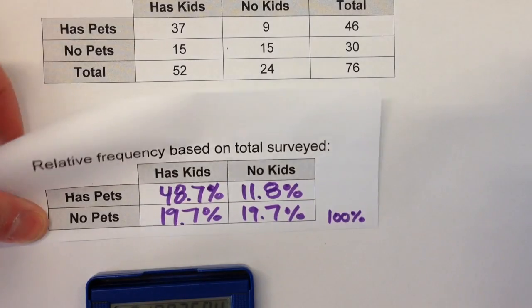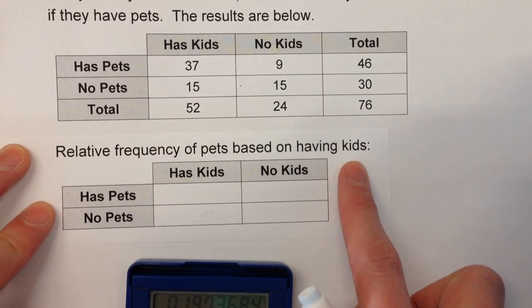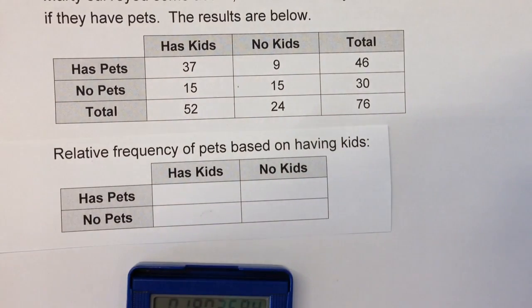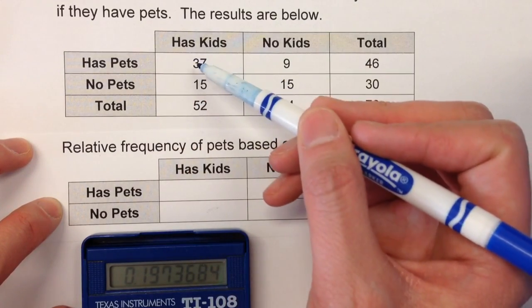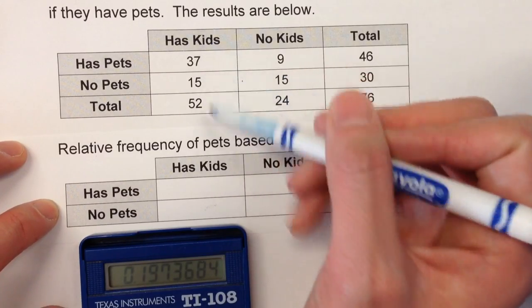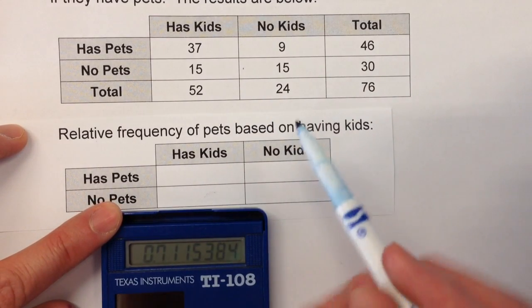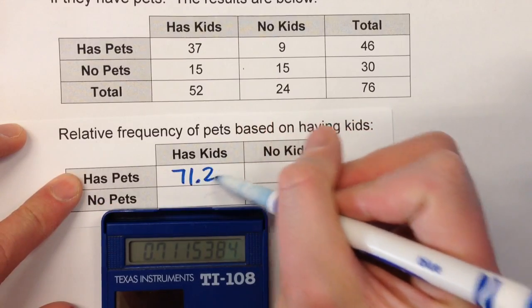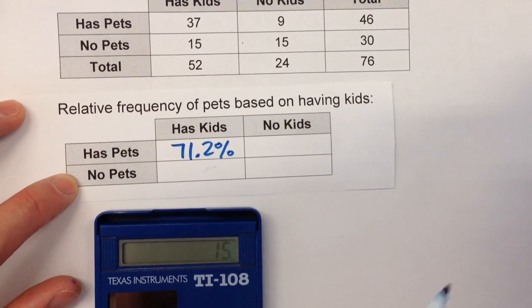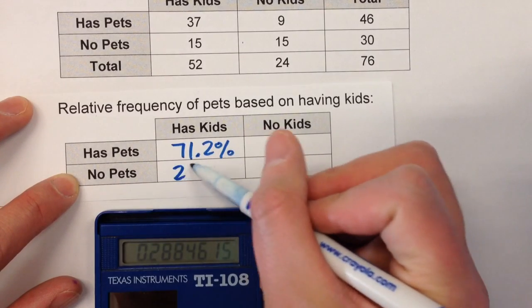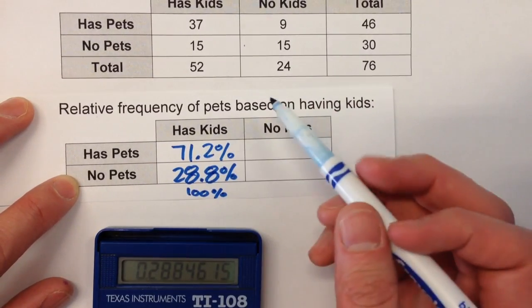But that's not the only way we could do this. Here's another type: relative frequency of pets based on having kids. Since we're basing it on having kids, we are looking at the table vertically, so our percentages are going to be out of the total of each column. For example, if they have kids and have pets, there's 37 of them out of a total of 52 people who have kids. So 37 divided by 52 gives about 71.2%. And 15 have no pets out of 52, so 15 divided by 52 is about 28.8%. This column should add up to 100%, or really close based on rounding.